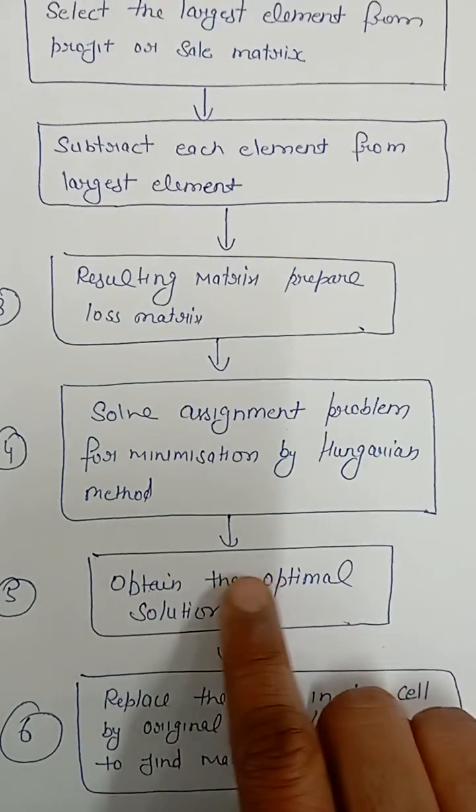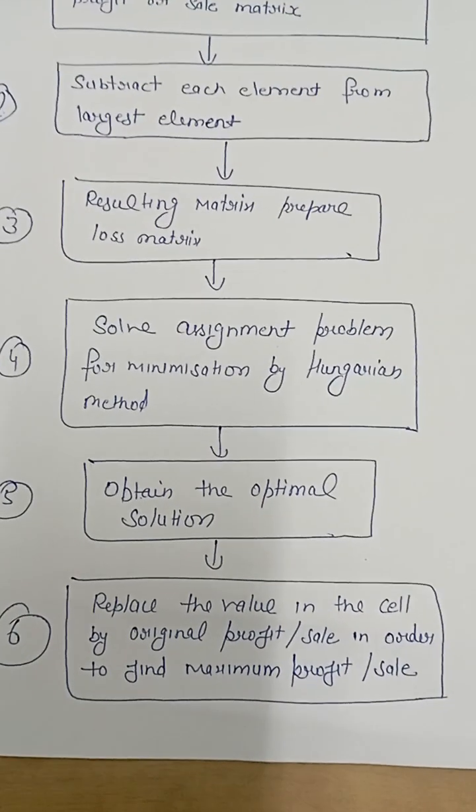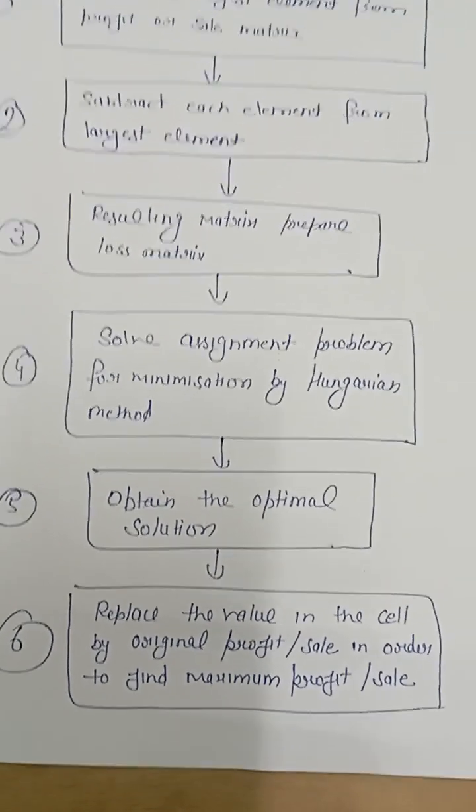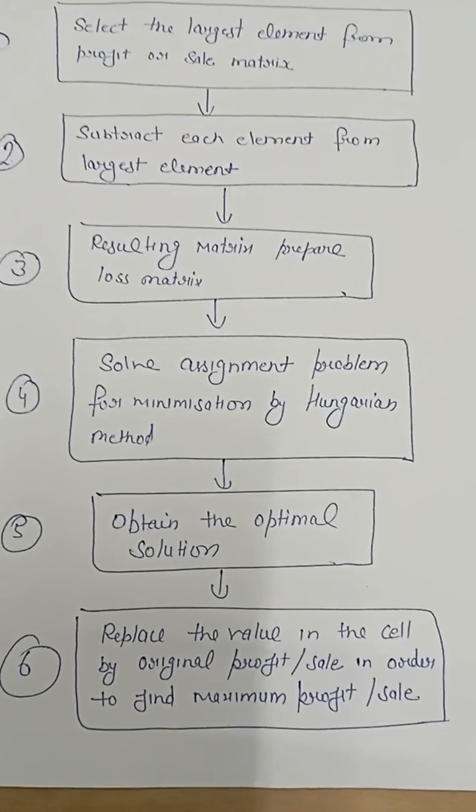Now, after obtaining the optimum solution, the next step is to replace the value in the cell by the original profit or sale in order to find maximum profit or sale.